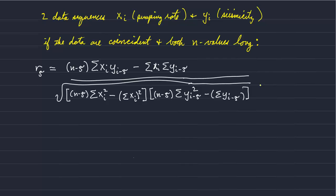And I forgot I should mention that the sum is over i equals one plus tau to n to the end of the data record.